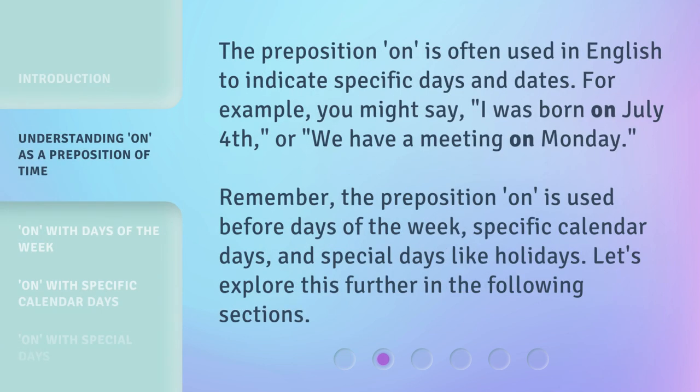The preposition ON is often used in English to indicate specific days and dates. For example, you might say, 'I was born on July 4th,' or 'We have a meeting on Monday.' Remember, the preposition ON is used before days of the week, specific calendar days, and special days like holidays. Let's explore this further in the following sections.